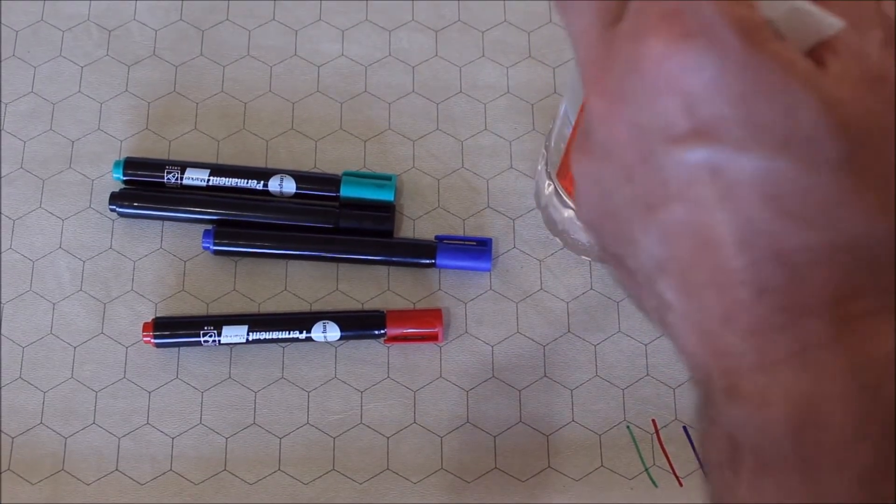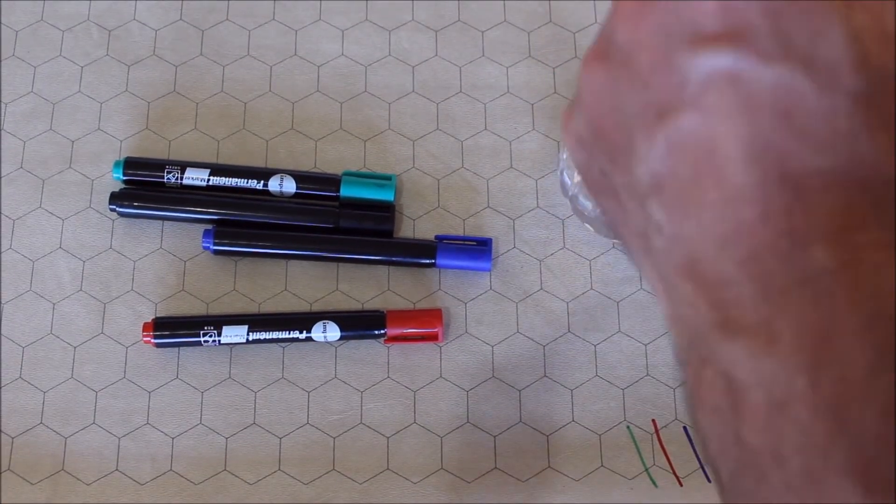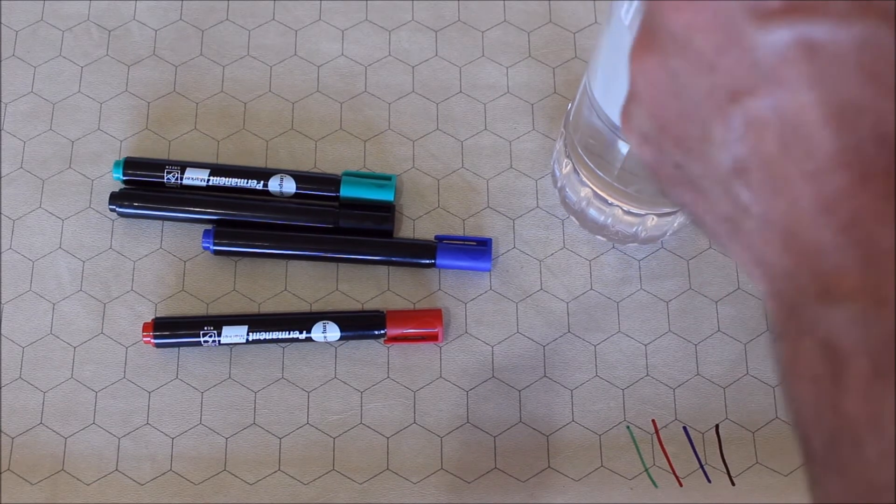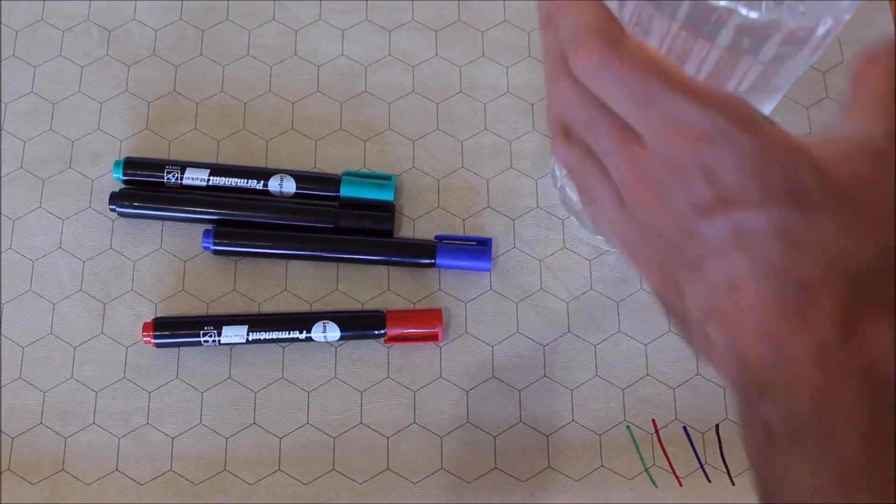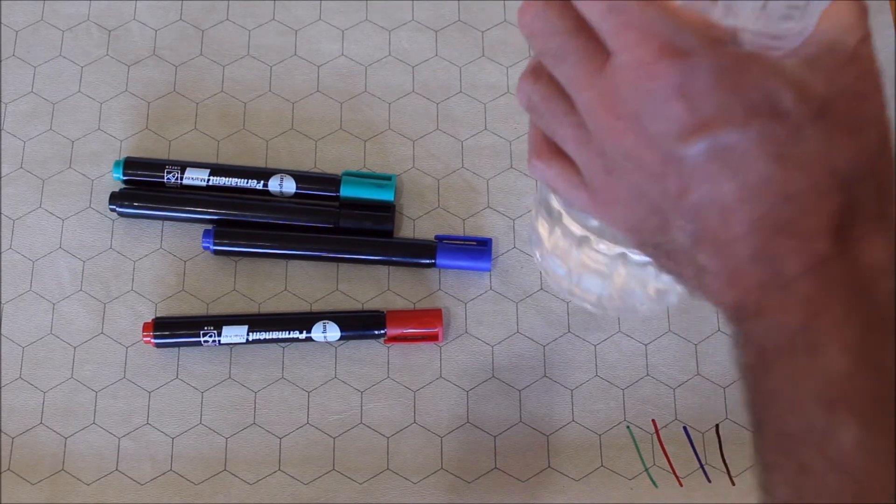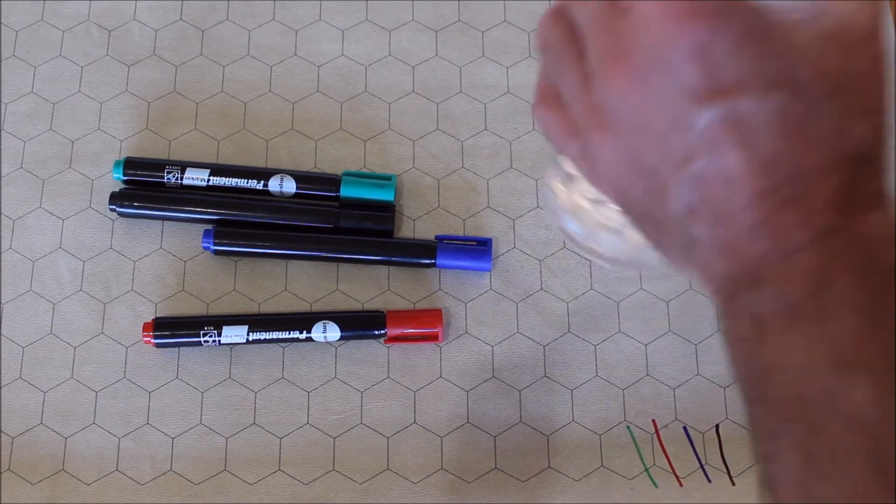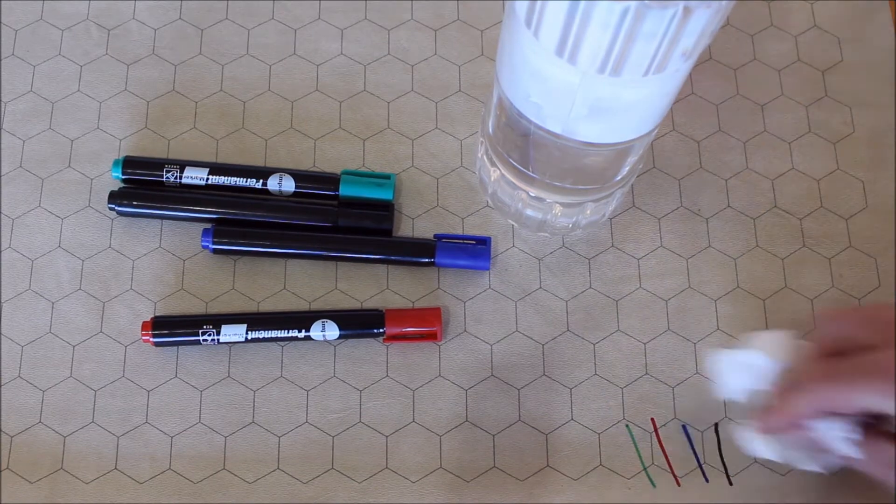This is where it starts getting really interesting, turpentine. I can just imagine this is probably going to take the entire surface off. Alcohol's not like a smart thing to put on any surface really.